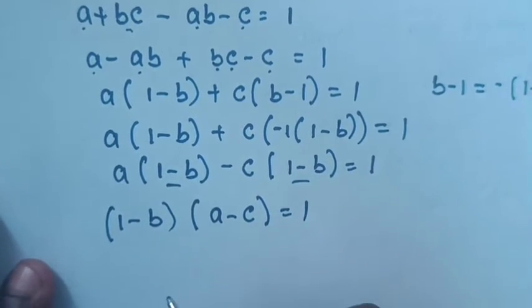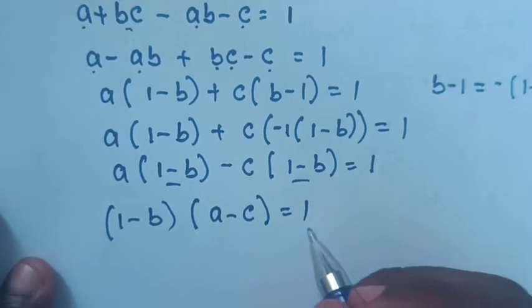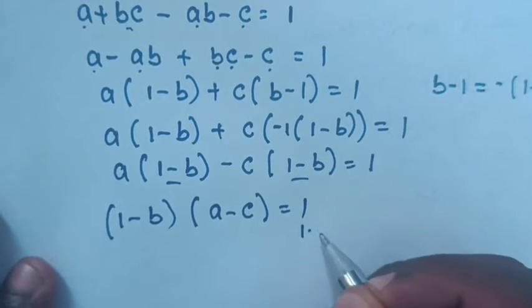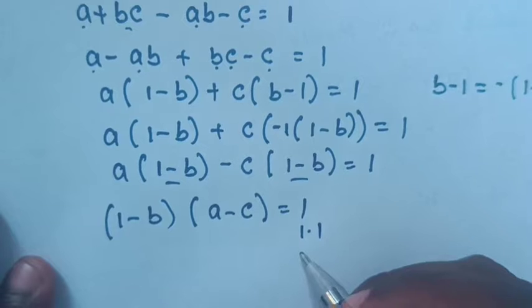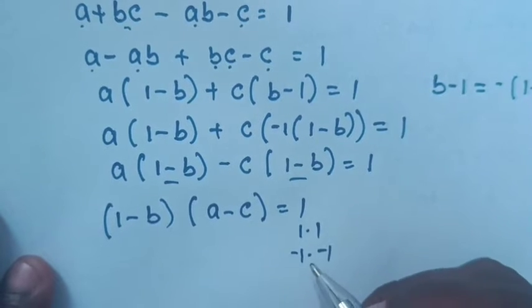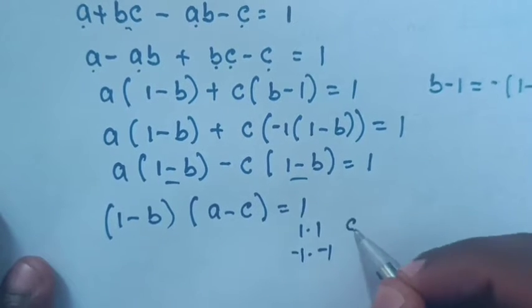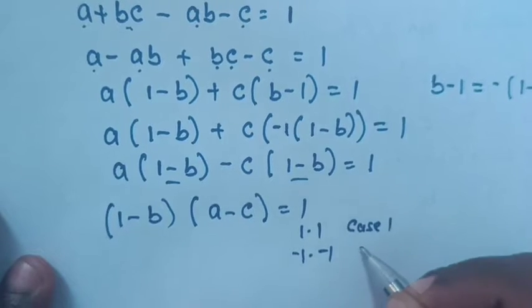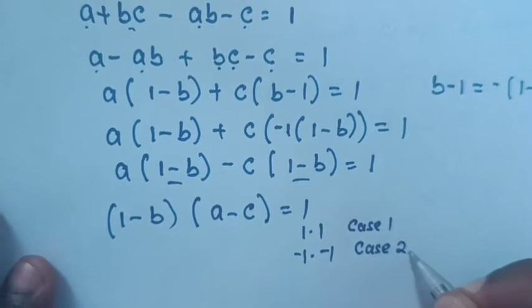Now, the product of these two factors equals 1. This means it may be 1 times 1, or negative 1 times negative 1. We call these Case 1 and Case 2.